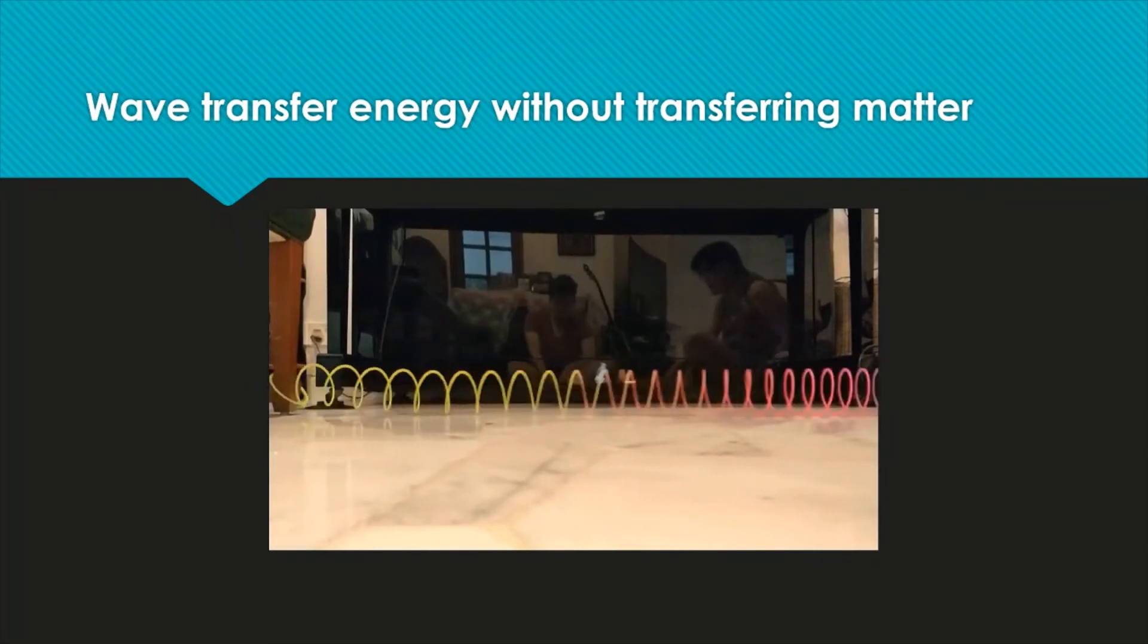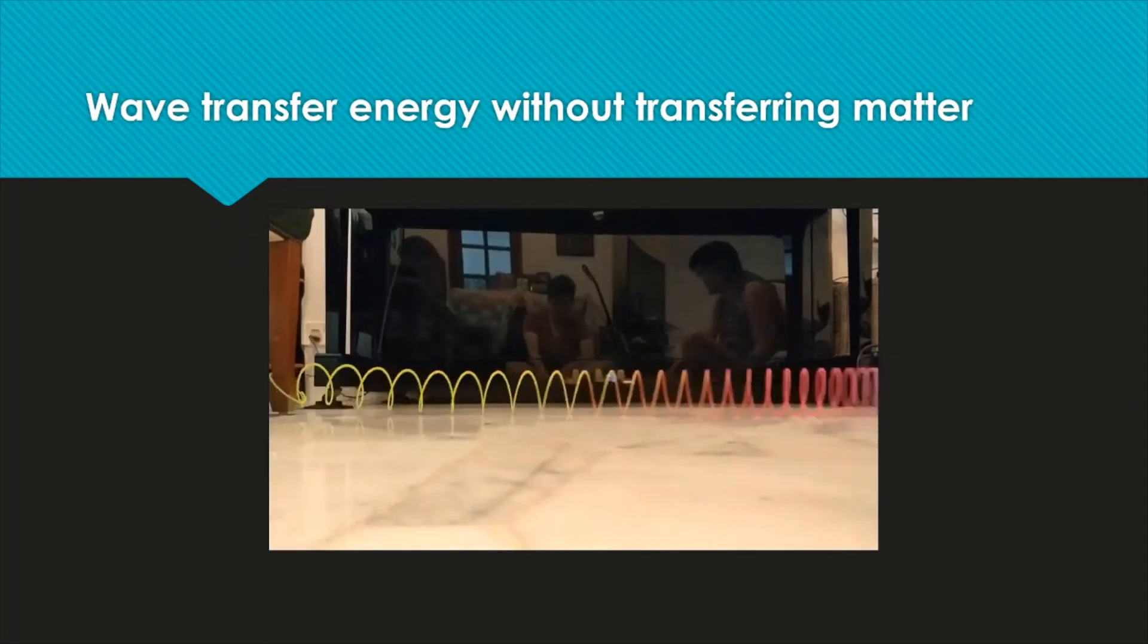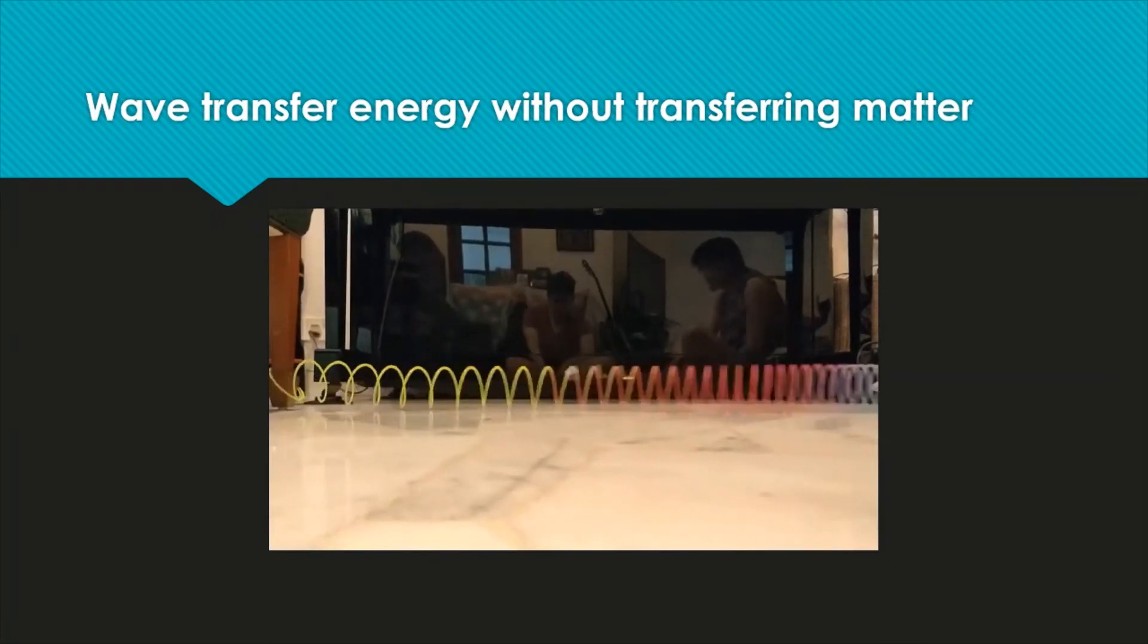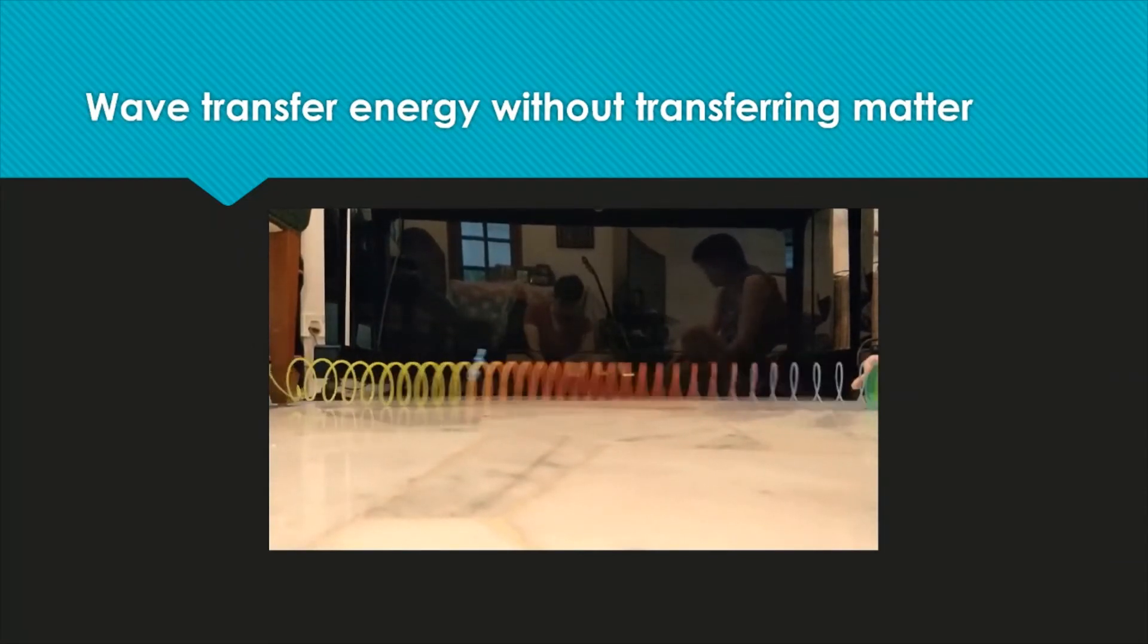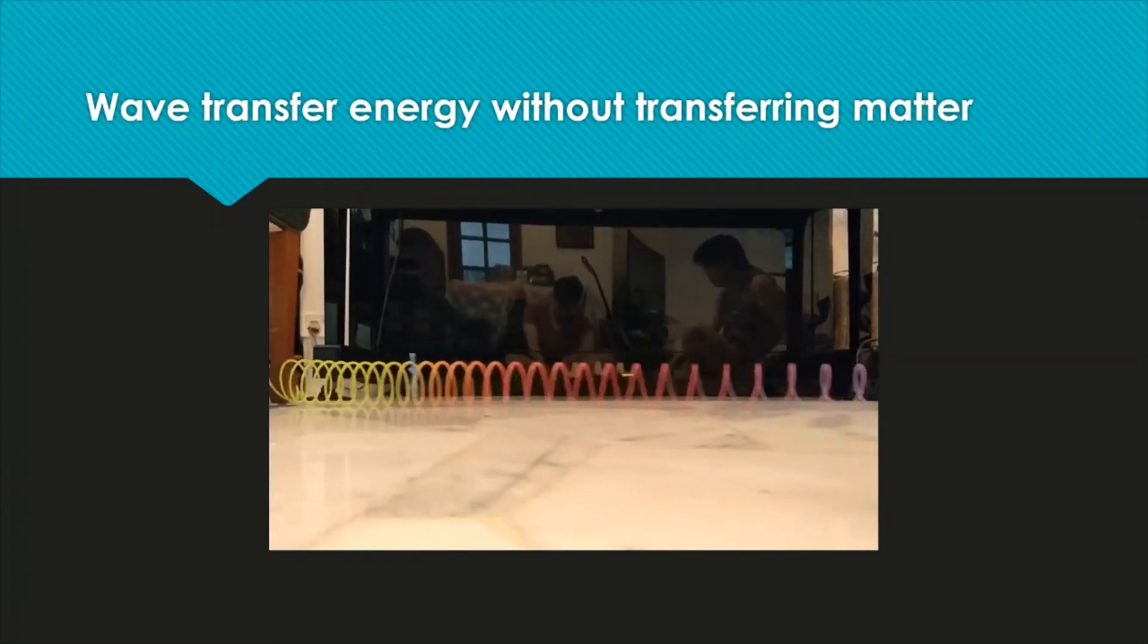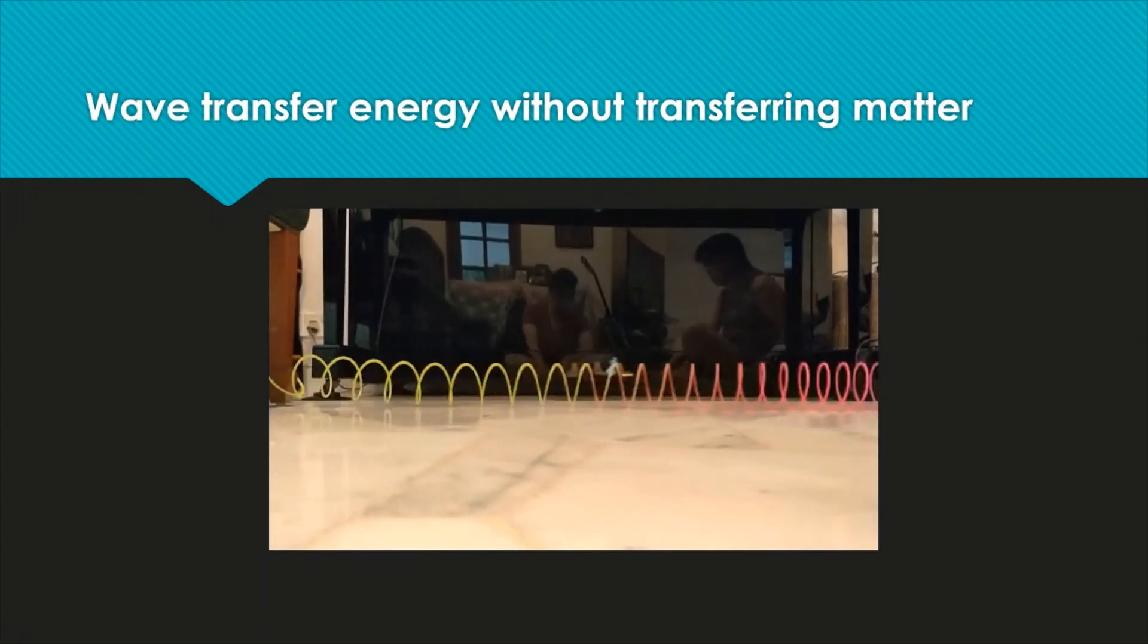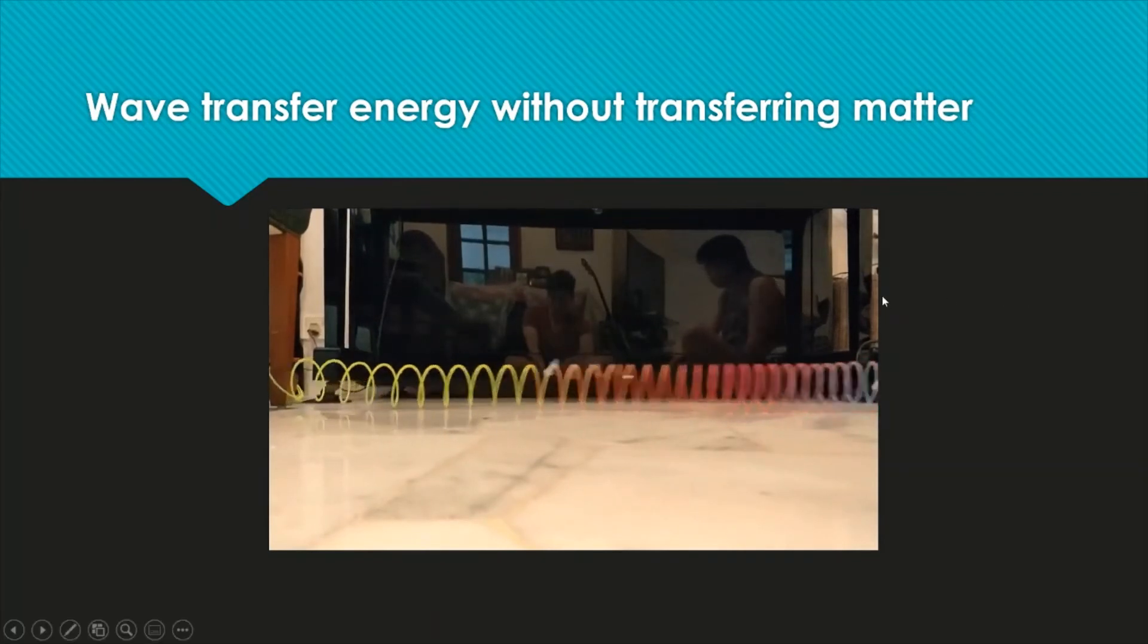Now look at the raffia string, the blue raffia string. The blue raffia string represents the particle of the medium. What is the movement of the raffia string? It is clearly shown that it is moving forward, backward, forward and backward. Does it move forward together with the wave, the energy of the wave until the end? No. It is only moving forward, backward. So wave transfers energy without transferring matter.